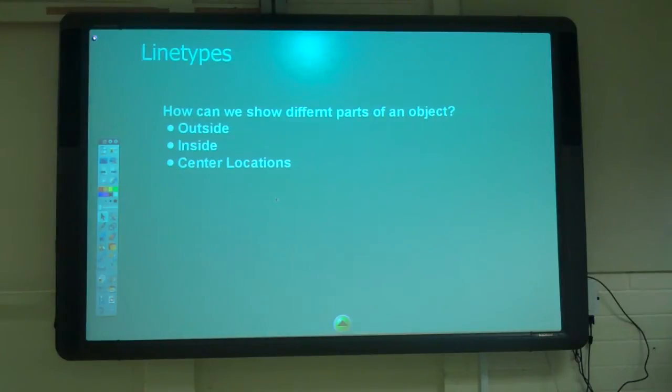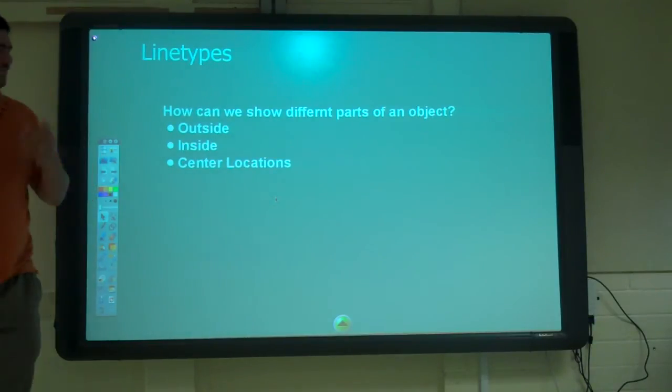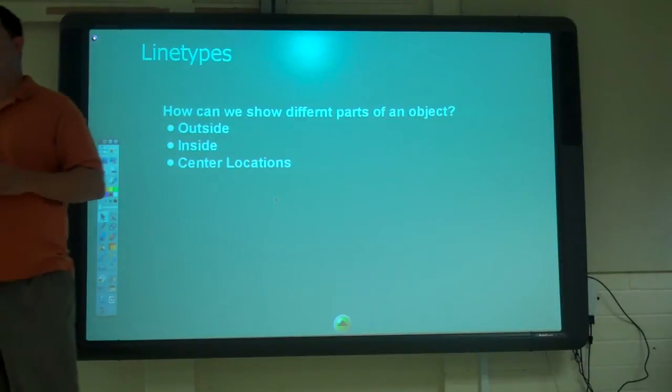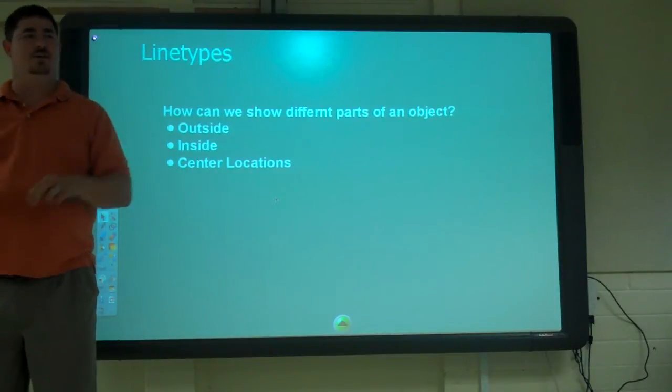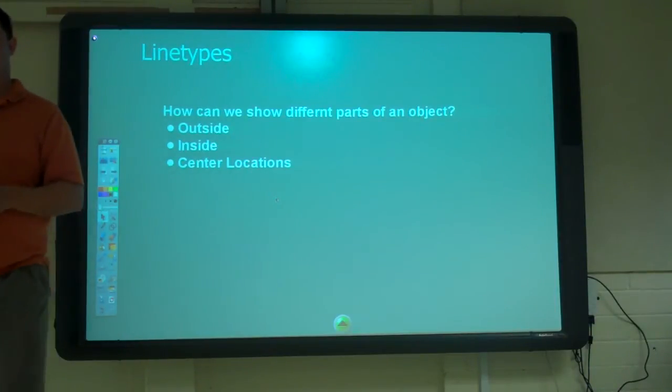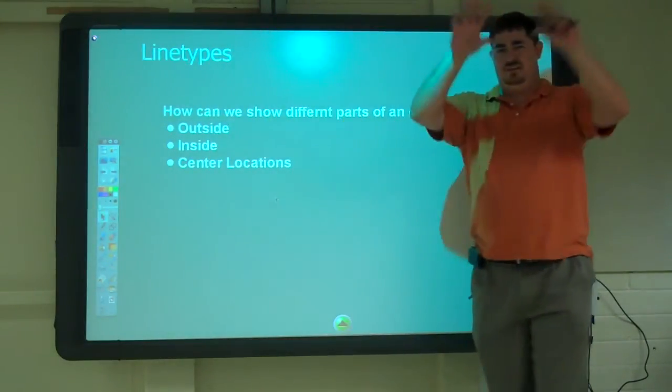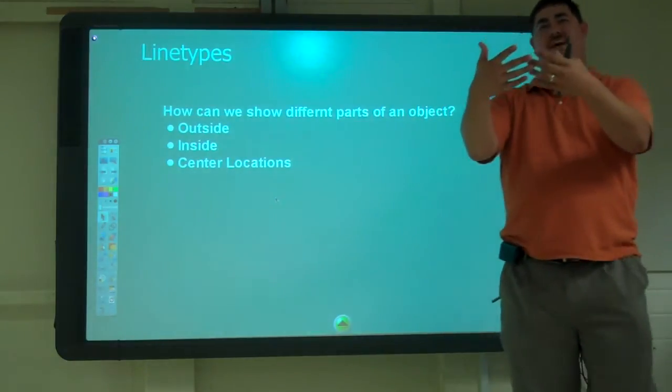Like a hole, you need to show where the center line of that hole is, both where you see a round and where you see it going through the part. So how do you show the outside of the part? What kind of a line? Just a solid, dark, thick line, right? Pretty easy, you can look at it and go, oh yeah, that's the outside.